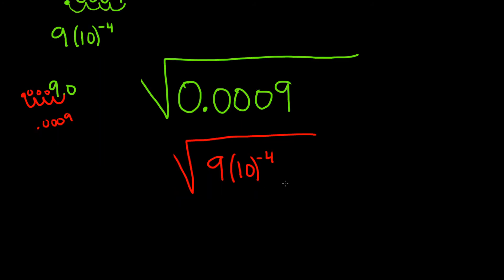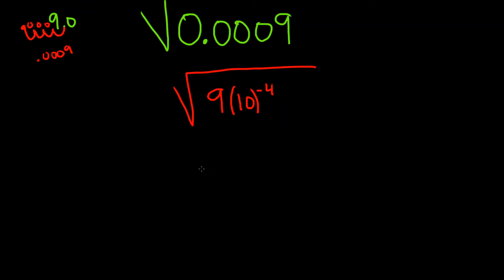So now we can just take the square root of each piece. This is the same as saying the square root of 9 times, and here's the trick, the square root of, we can write this as 10, let's try it like this, 10 to the negative 2 squared.